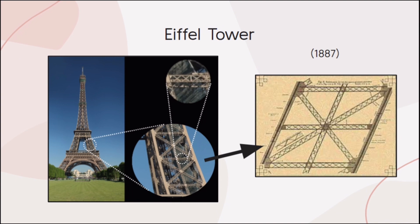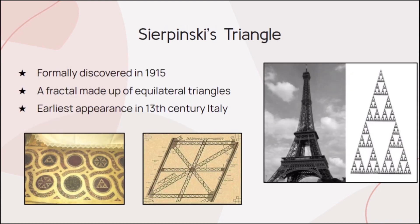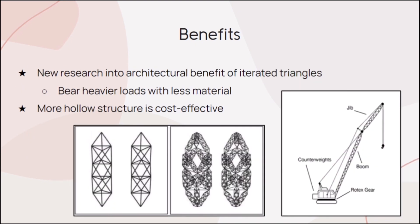The next piece of architecture is the Eiffel Tower. Built for the World Fair in 1887, its structure contains a self-repeating pattern of triangles. This artistic design was laughed at at the time, but we're going to take a closer look at its importance. The triangles within triangle structure bears a resemblance to Sierpinski's triangle. However, this model was only discovered by Sierpinski in 1915, 28 years after the Eiffel Tower's construction. In fact, this design can be traced back to 13th century Italian art. Researchers in Europe are now looking into creating structures with much higher levels of iteration than the Eiffel Tower. It is already well known that triangles are the ideal shape for load-bearing structures, but an iterated triangular structure could accomplish this with much less material, making the project much more cost-effective.